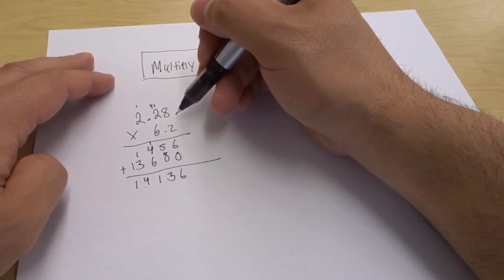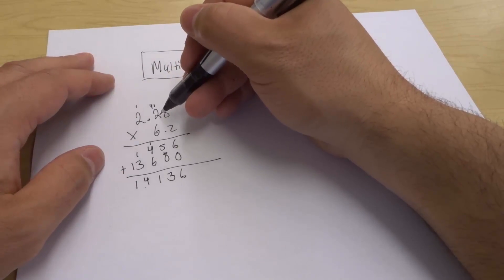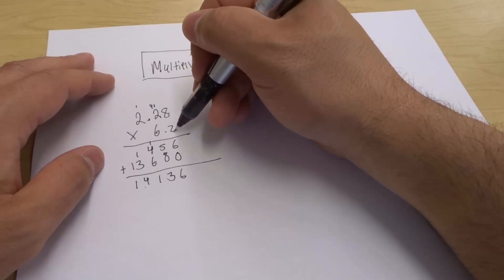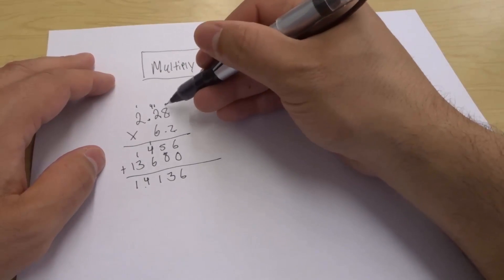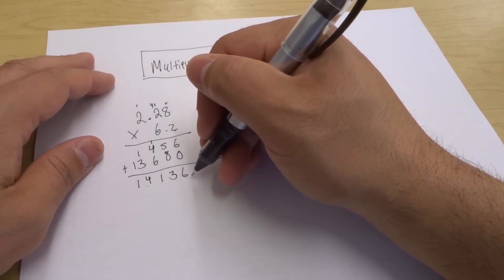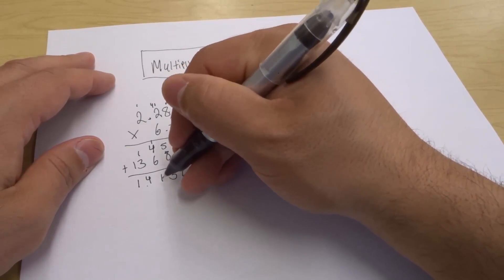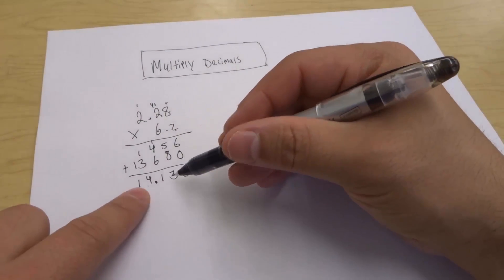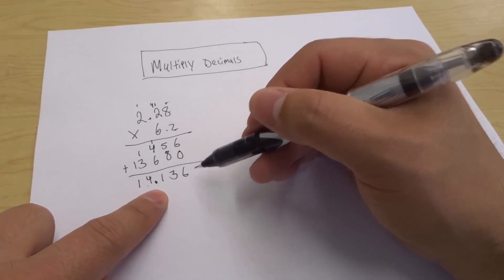We need to figure out how many decimal spots there are in these numbers. How many numbers are to the right of the decimal? In this first number, there are two numbers to the right of the decimal. In the second number, there's one number to the right. Therefore, 2 plus 1 gives us 3. We need three numbers to the right of the decimal: 1, 2, 3. Put the decimal right there. Our answer is 14.136.